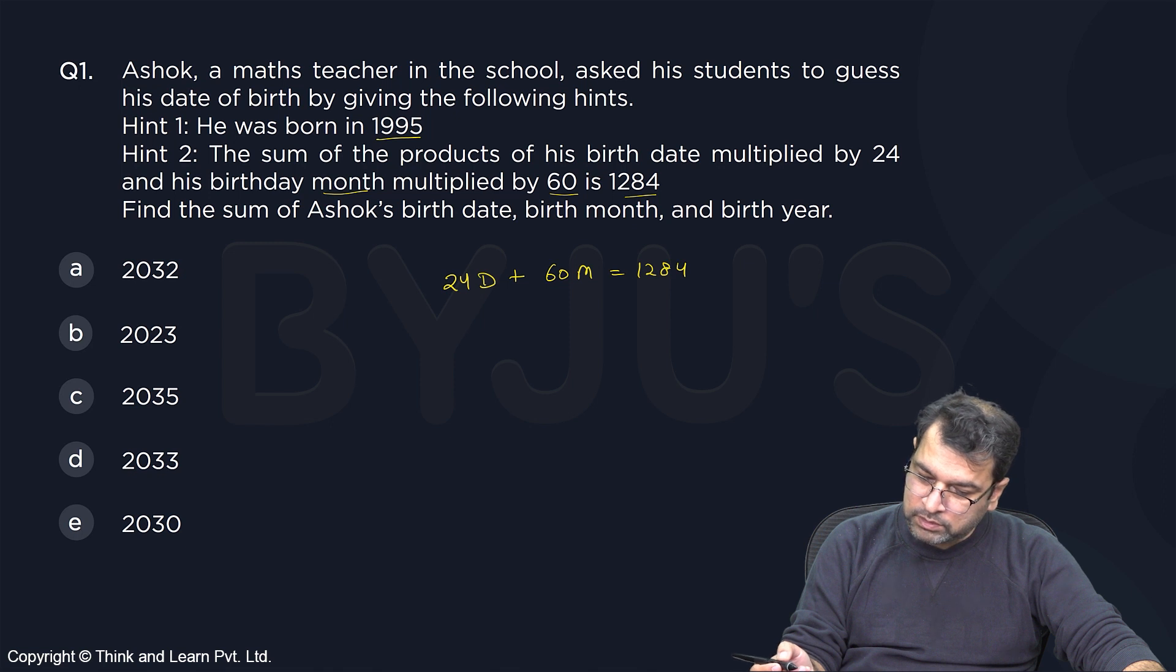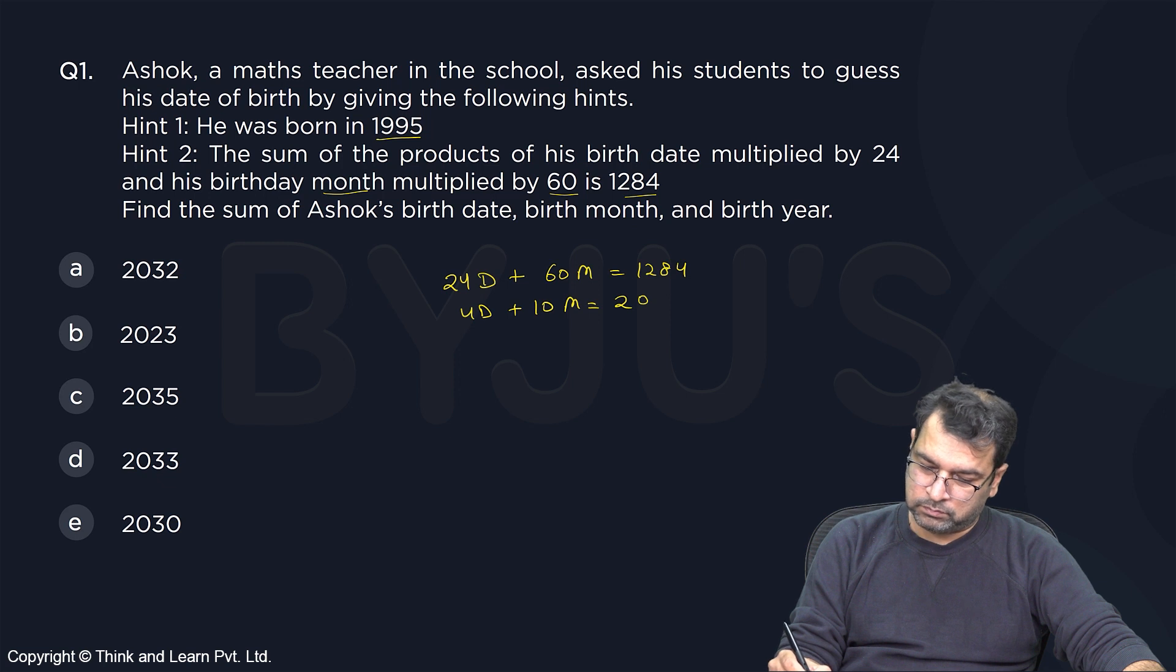What can be canceled out? 4 will be canceled out, 6 will be canceled out. 6D plus 10M is equal to 214. So I think 2 should be canceled out. 2D plus 5M is equal to 107. This is your equation.